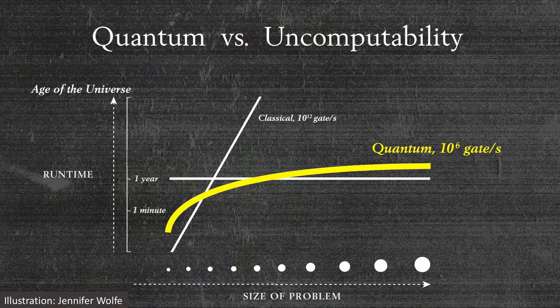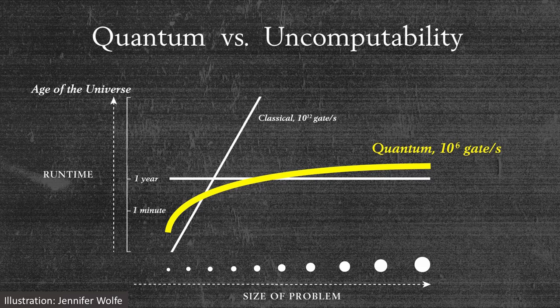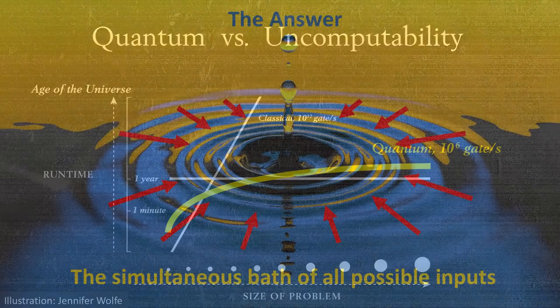And that is a restriction. There are problems which scale exponentially on a classical computer as the problem size gets bigger, rapidly hitting the edge of the universe — where a quantum computer would still be able to finish in a reasonable amount of time.